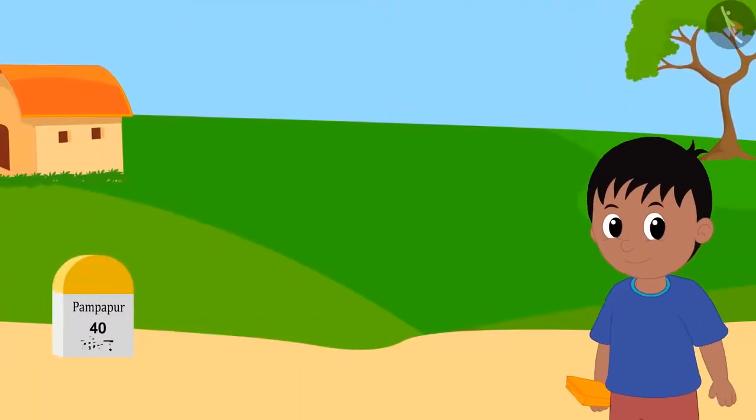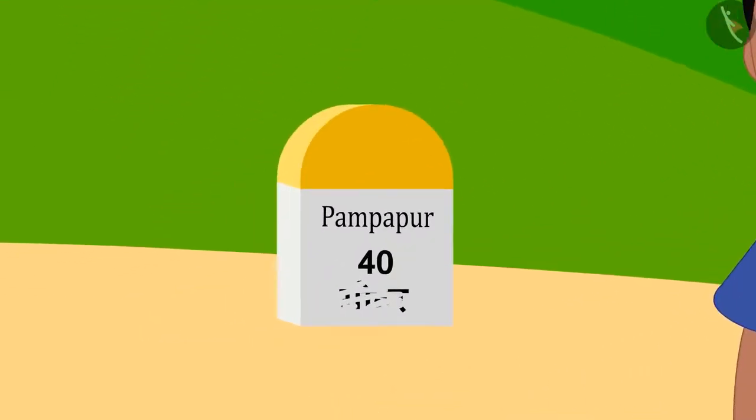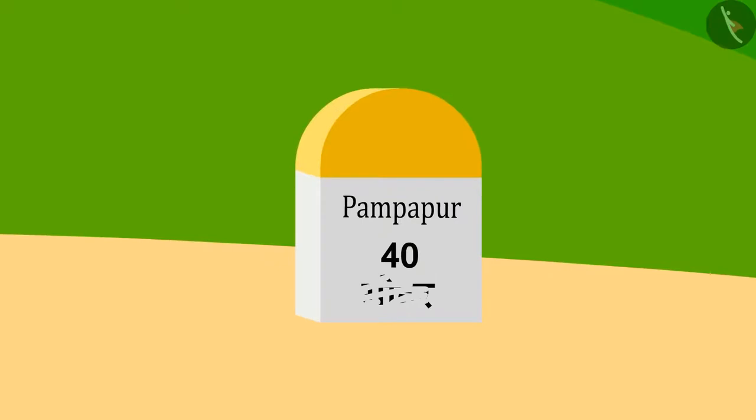Now, Raju was about to reach his house. Just then, on the way, he saw it was written on a stone plate on the ground: Pampapur 40, but the unit below was erased.